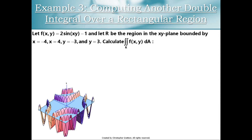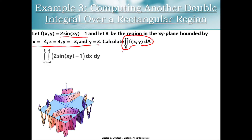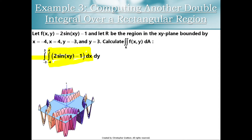Let's try one more quick example. I have a new surface: f of xy equals 2 sine of xy minus 1. And I have a new rectangular region on the xy plane. I get to choose whether to do this as a dy dx integral or a dx dy integral. Over a rectangular region, it really doesn't matter which one you pick, as long as there's consistency in the setup. Later on with non-rectangular regions, sometimes one order is better than the other. Notice I have a dx integral where x varies from negative 4 to 4, which matches the problem setup.